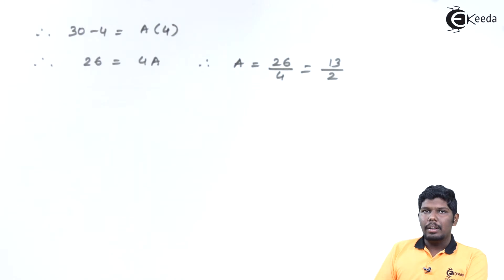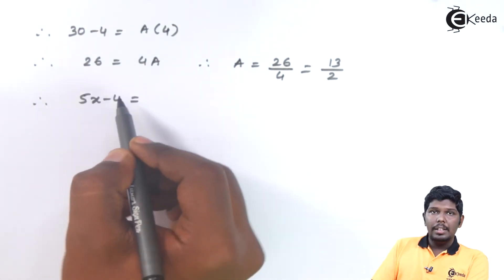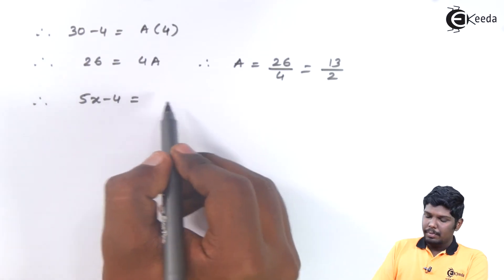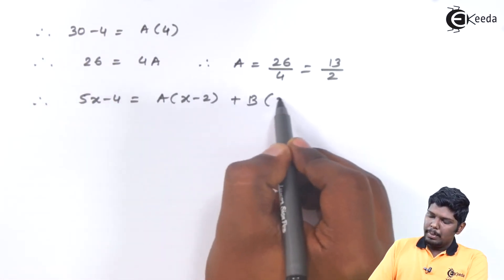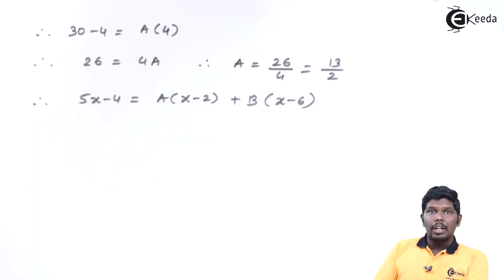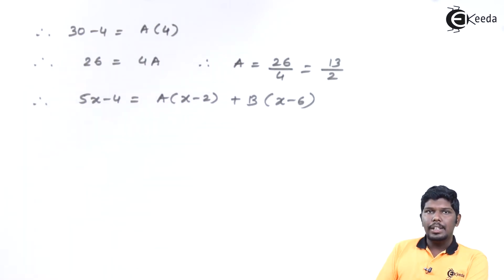Similarly we will find the value of b. For that 5x minus 4 is equal to a into x minus 2 plus b into x minus 6. Now we can put the value of x as 2 as 2 minus 2 will make this term 0.